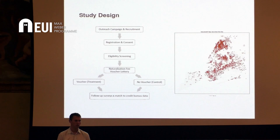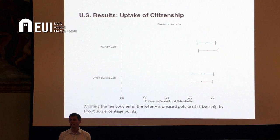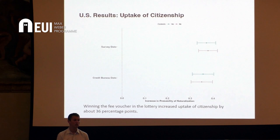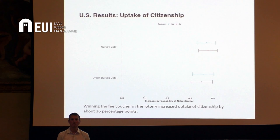What do we find? First, removing this cost barrier actually makes a pretty dramatic difference to people's chances of becoming citizens. Among voucher winners, the naturalization application rates are about 36 percentage points higher than among those who didn't win in the lottery, suggesting that this cost barrier is a really significant deterrent for a lot of motivated folks who want to become citizens but simply can't afford it.